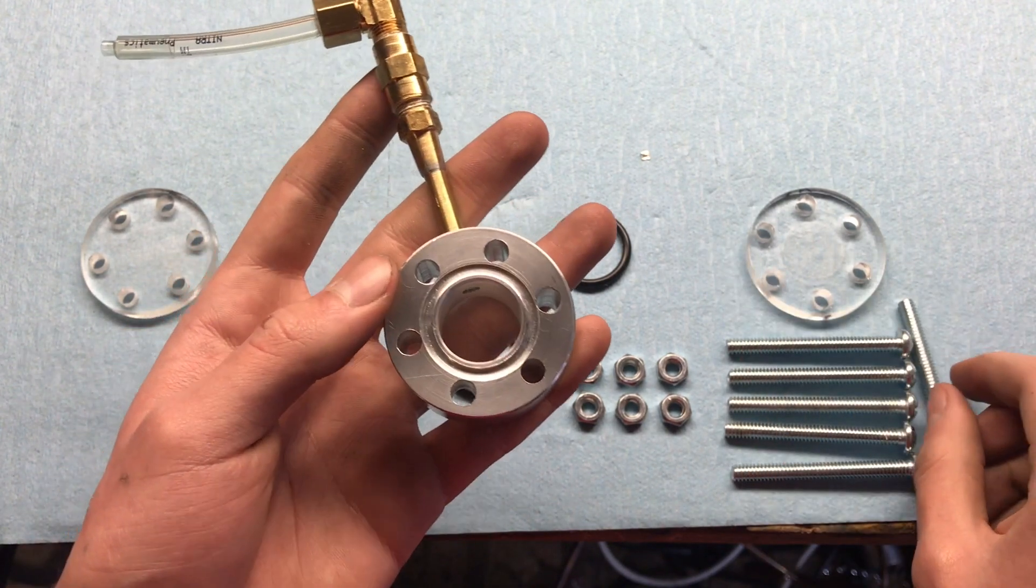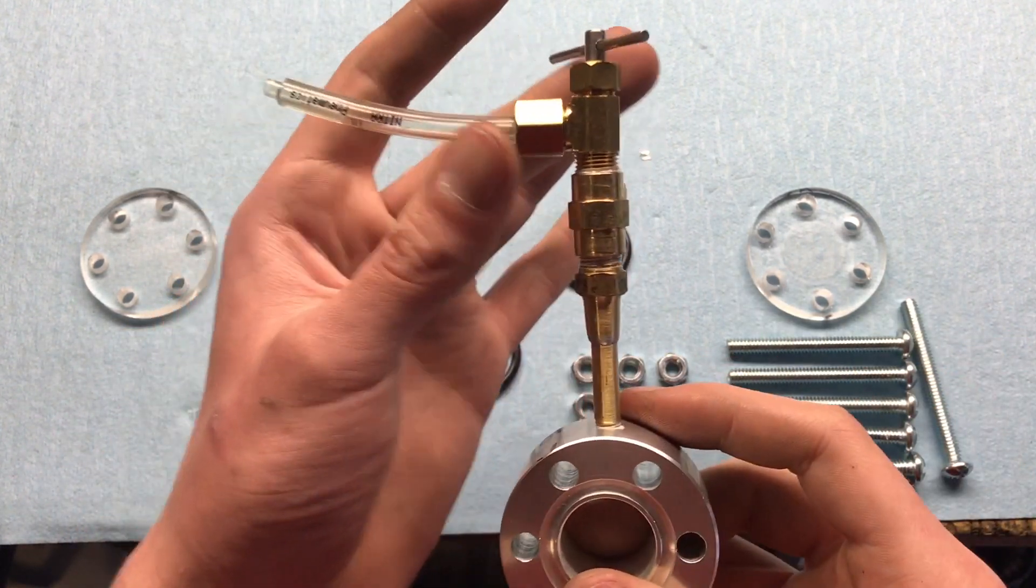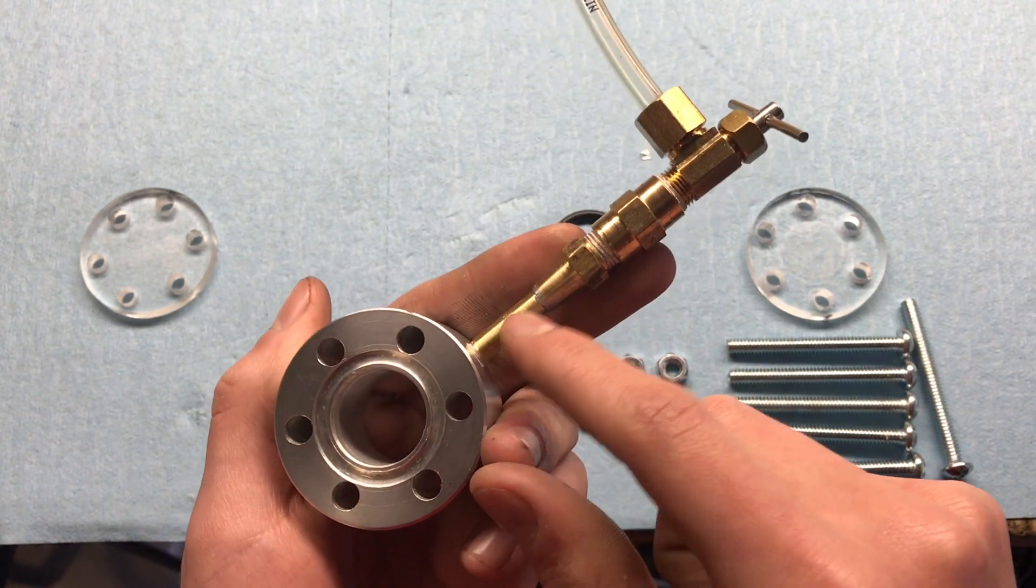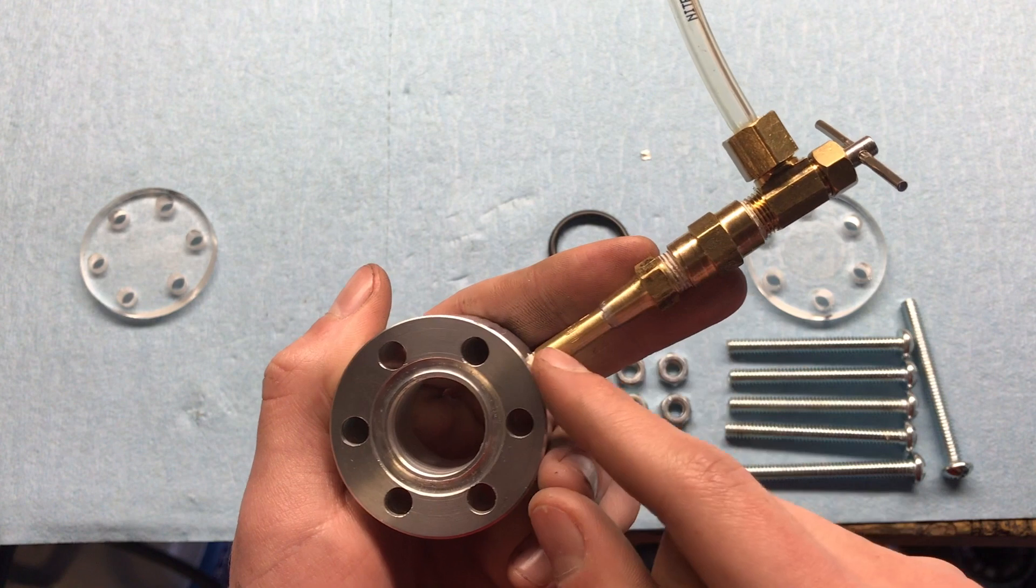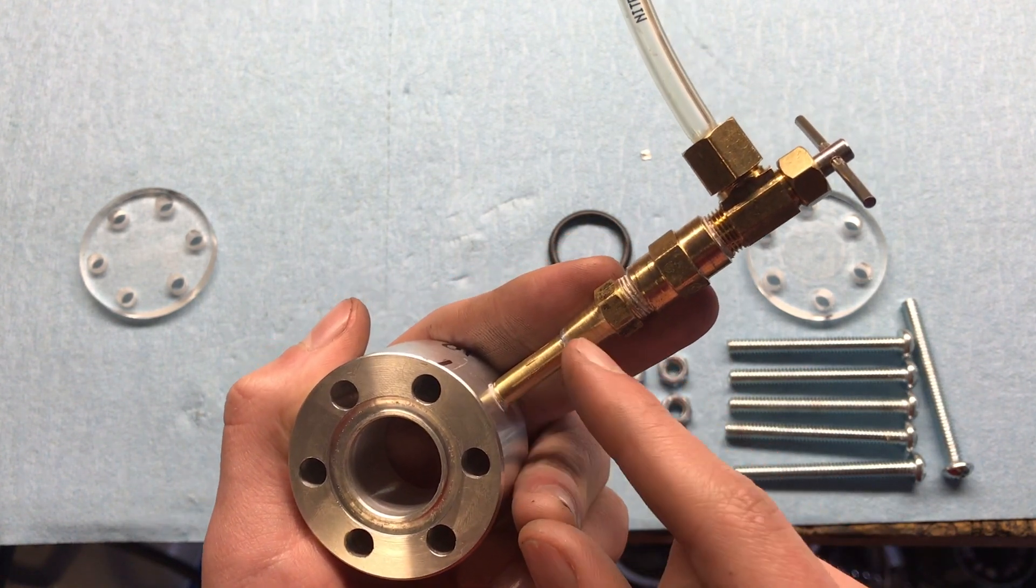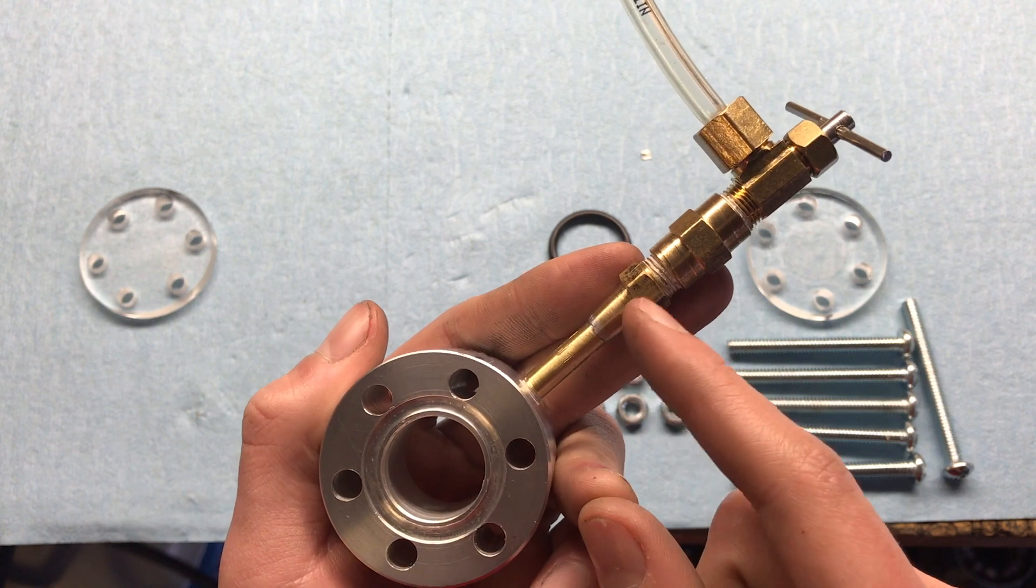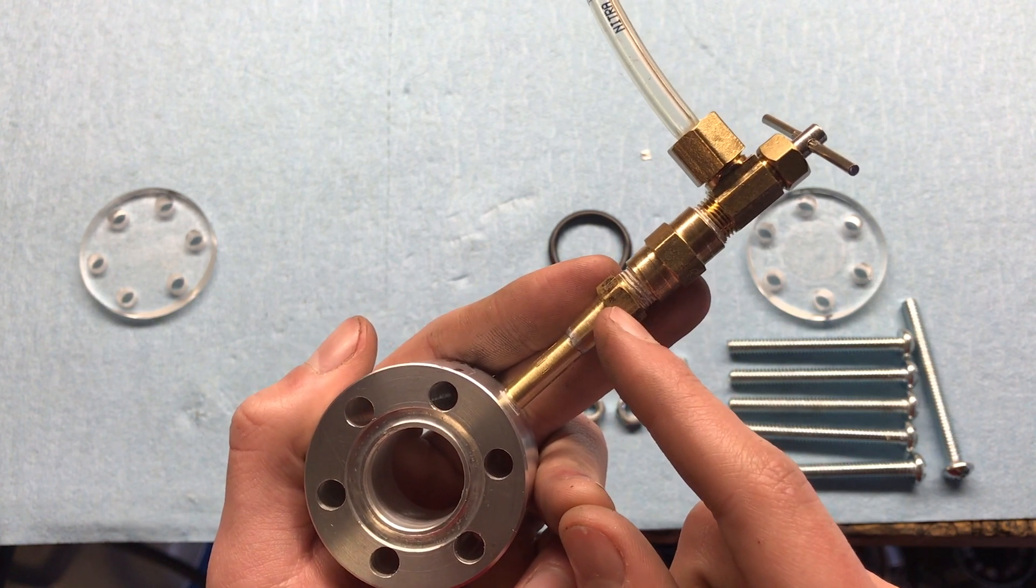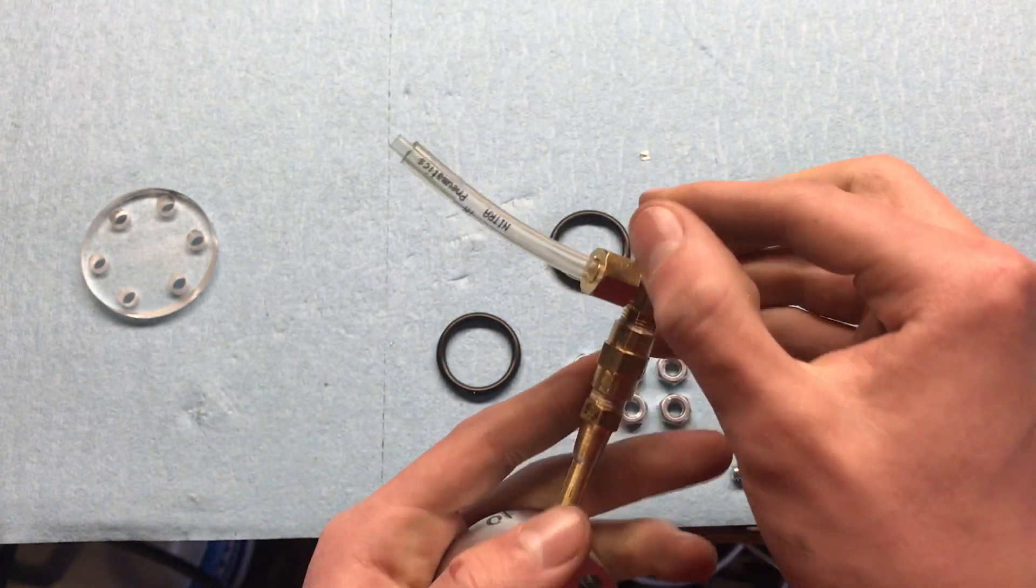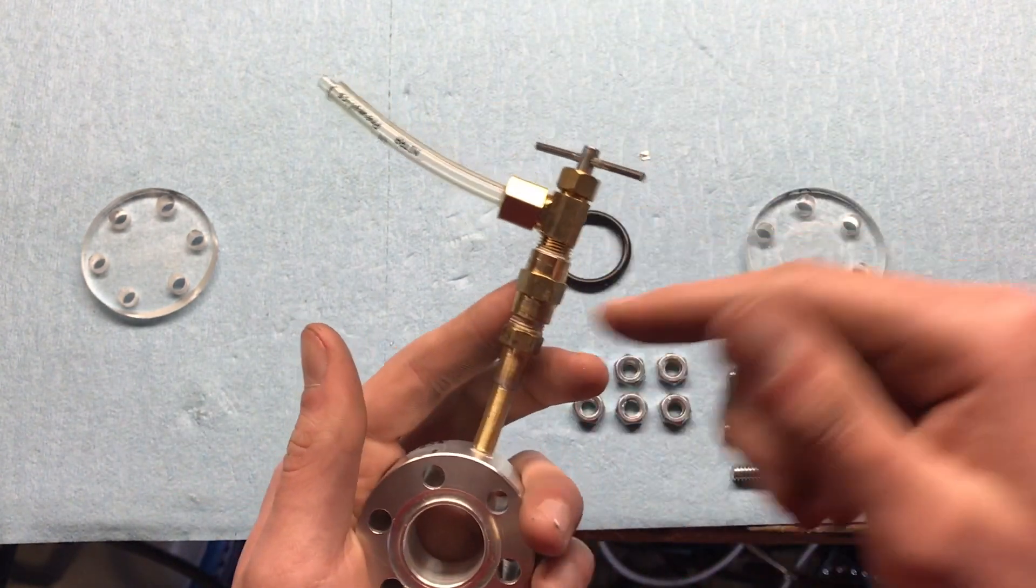The filling apparatus on top was a bit of a custom job. This piece here was a custom fitting I made out of some brass rod, and then a little one-eighth NPT nipple that couples to this needle valve. This whole apparatus can be used to both release the chamber and fill the chamber.